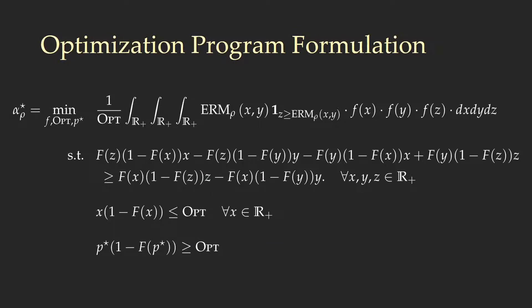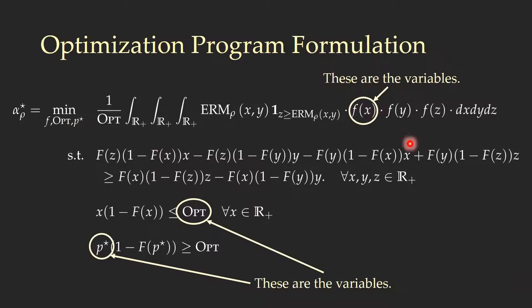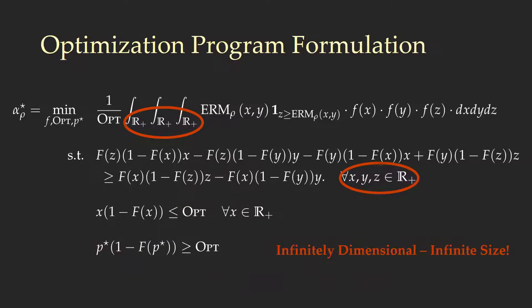We conclude with an optimization program with the objective function, regularity constraints, and optimality constraints. The variables are the distribution F—with small f denoting the probability density function and capital F the cumulative distribution function—along with the optimal revenue and optimal reserve price P-star. The main problem is that although this program exactly equals the approximation ratio, it is infinitely dimensional and infinite-sized, so it's very hard to solve. We therefore introduce relaxations that provide only a lower bound on the approximation ratio.